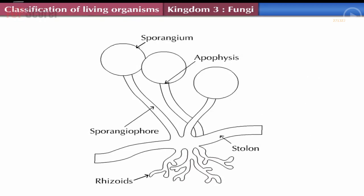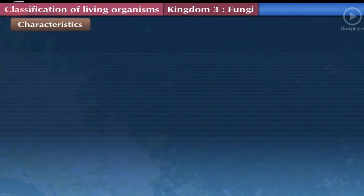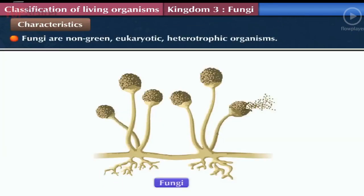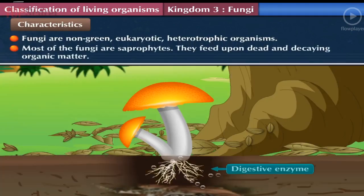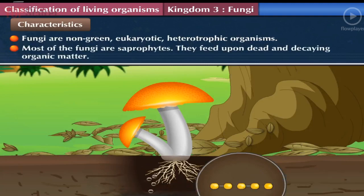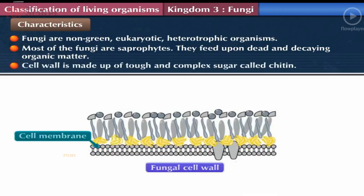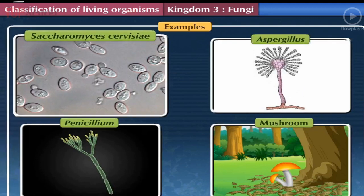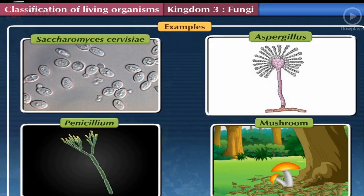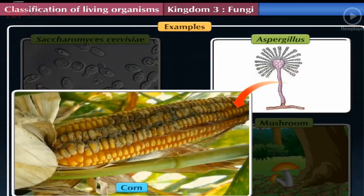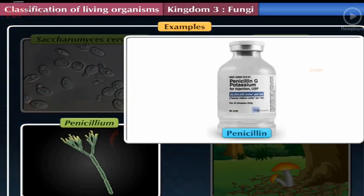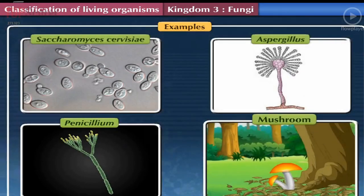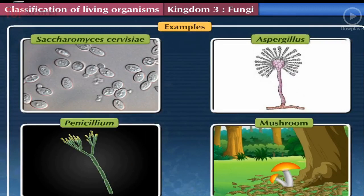General characteristics of Kingdom Fungi: Fungi are non-green, eukaryotic, heterotrophic organisms. Most fungi are saprophytes — they feed upon dead and decaying organic matter. The cell wall of fungi is made up of a tough and complex sugar called chitin. Some fungi are thread-like with many nuclei in the cytoplasm. Examples include Saccharomyces cerevisiae (baker's yeast), Aspergillus (grows on corn), Penicillium (source of antibiotic penicillin), and mushrooms.